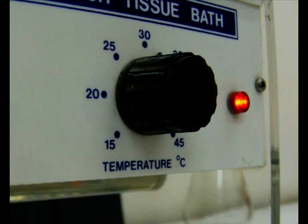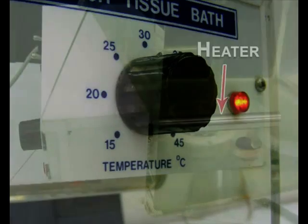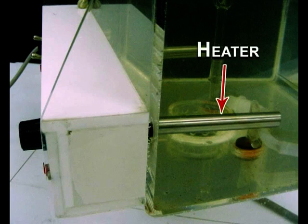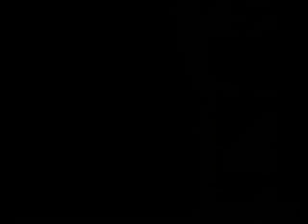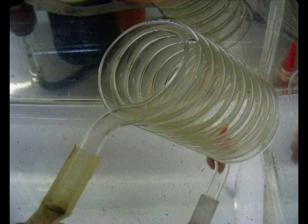The temperature regulator sets the bath at the required temperature. The heater raises the temperature of the water bath to the required temperature. The coil allows the physiological solution to attain the bath temperature as the solution runs through it.